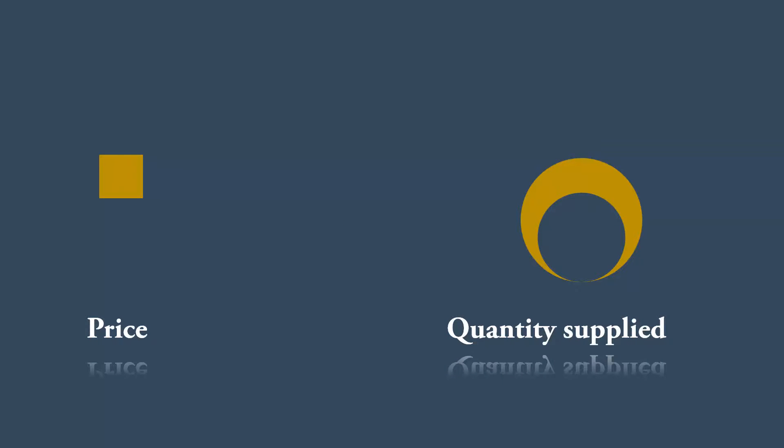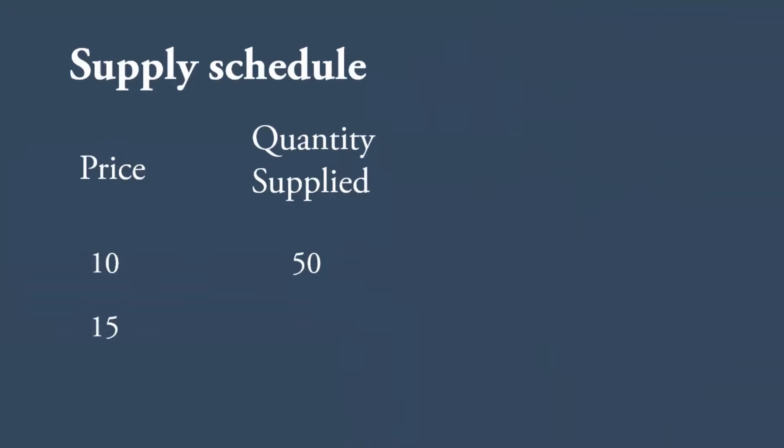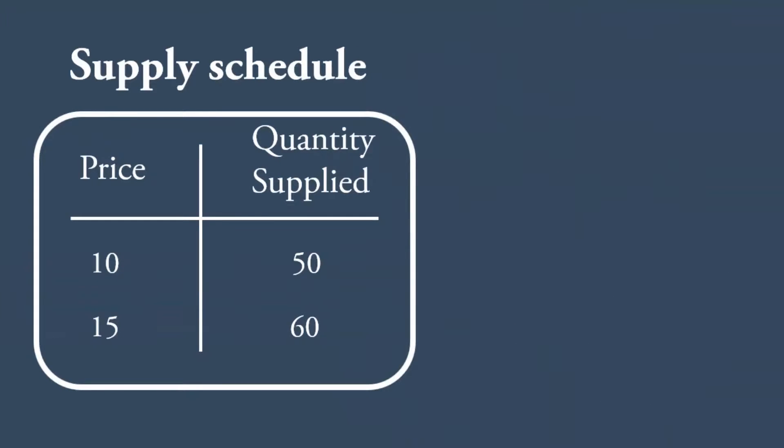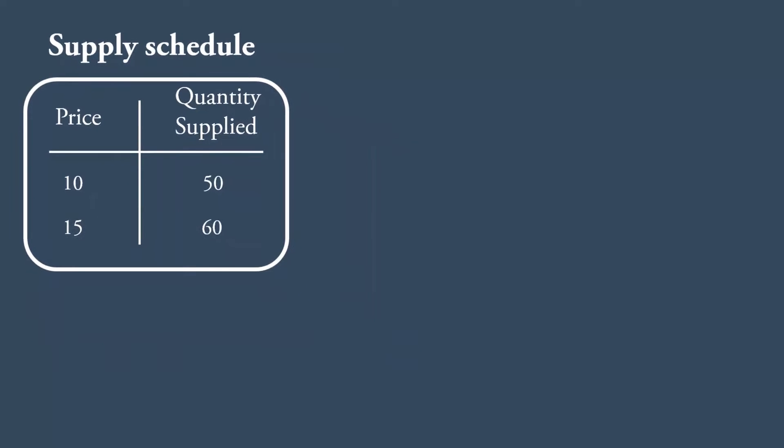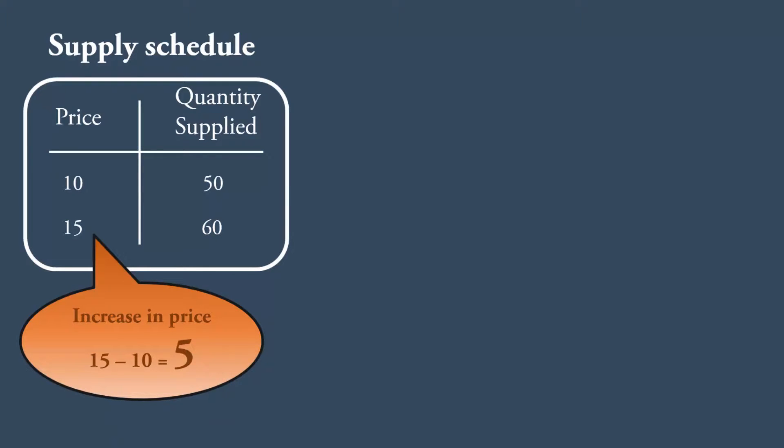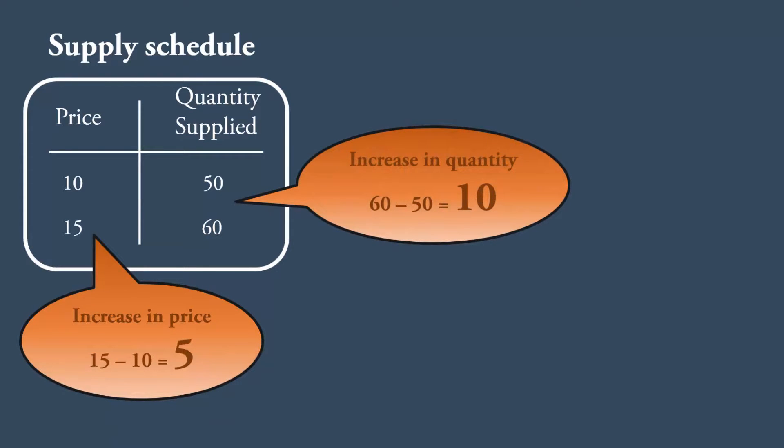How? Look at the supply schedule. As the price goes up from Rs.10 to Rs.15, the quantity expands from 50 units to 60 units. Price changes by Rs.5, quantity increases by 10 units. It is quite obvious that change in price is less than the change in quantity.